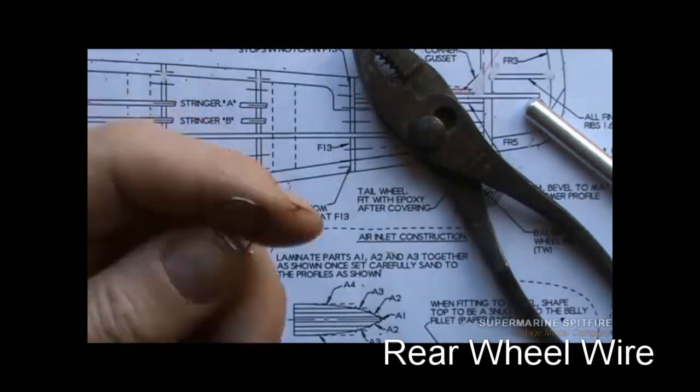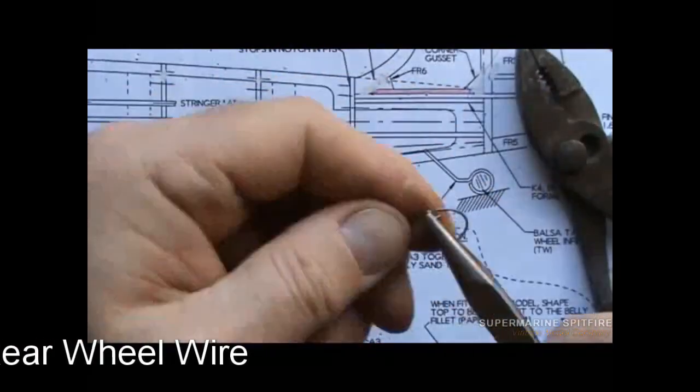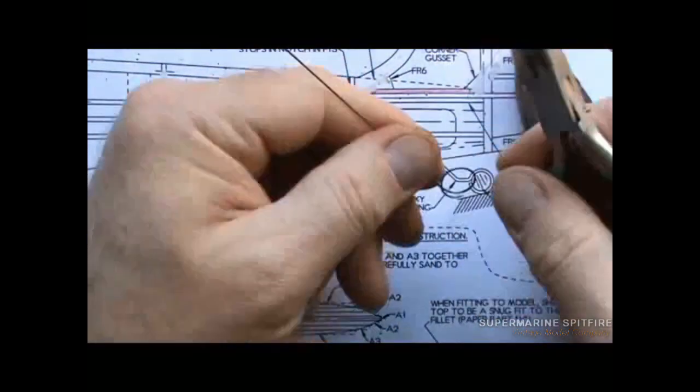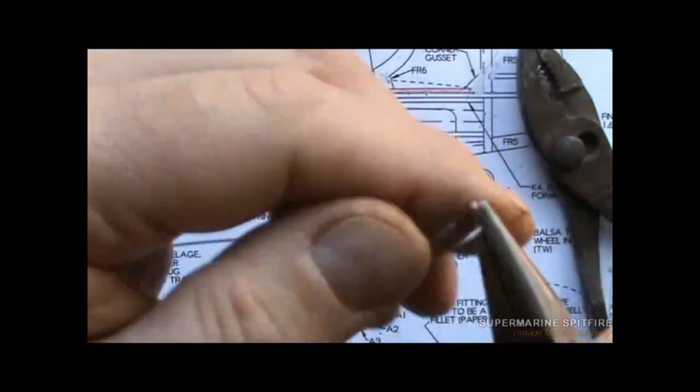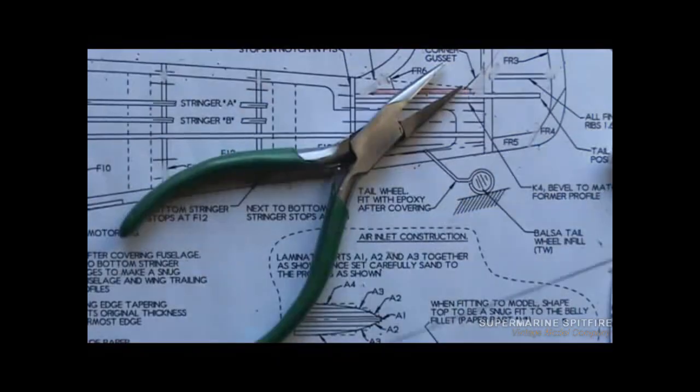Hi everyone, welcome to this week's build. I think we're on video or part six of the build now, and this is the undercarriage. So let's dive straight in and we're going to start off with the rear jockey wheel.